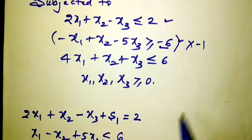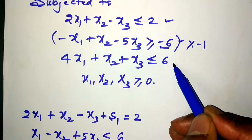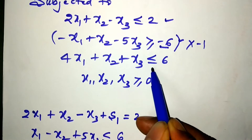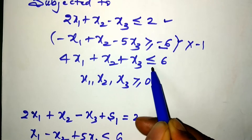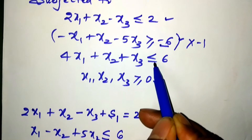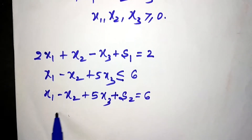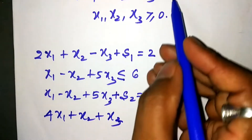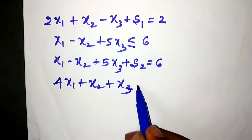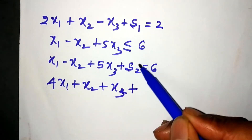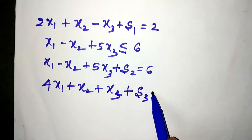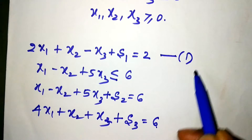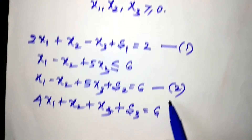Now taking the third constraint: 4x1 plus x2 plus x3 is less than or equal to 6. Whenever we have a less than or equal to sign, we add a slack variable — so I add s3 and make it an equation equal to 6. So my standard form constraints are these three equations.